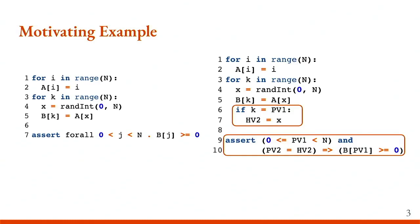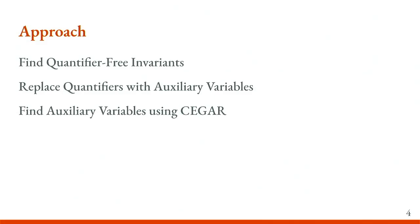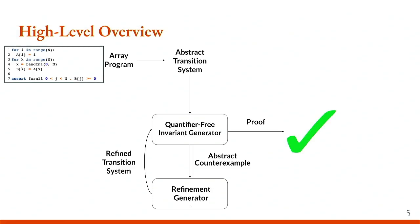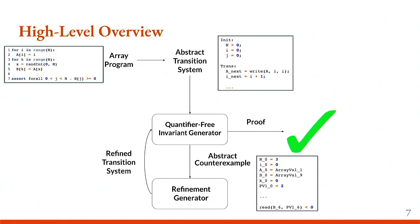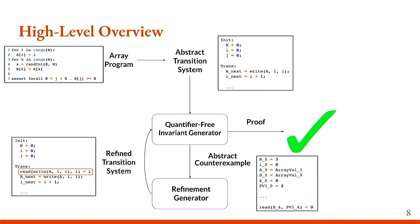Our approach is to find quantifier-free invariants by replacing quantifiers with auxiliary variables, and we find auxiliary variables using counterexample-guided abstraction refinement. The high-level overview: we start with an array program, translate it to an abstract transition system with an initial state, set of state variables, transition relation, and property. We pass that to a quantifier-free invariant generator, which may give us an abstract counterexample — one that does not abide by the array theory. We pass that to the refinement generator, which is the main contribution of the work, producing a refined transition system. We continue in this loop until we hopefully get a proof.